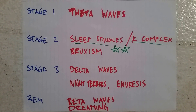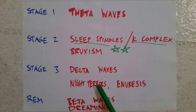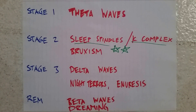Stage three involves delta waves. This is the deepest stage of sleep. It's also the stage that involves night terrors and nocturnal enuresis, or bedwetting at night.